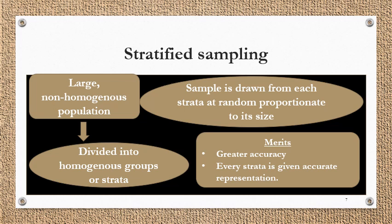Now we will discuss stratified sampling. Stratified sampling — strata means layers. When a large, non-homogeneous population is available, we divide this population into homogeneous groups or strata, and a sample is drawn from each stratum at random, proportionate to its size. For example, during the lockdown period, if I want to know the average expense of families in Indore, just taking a few random families would make it very difficult to reach a conclusion.